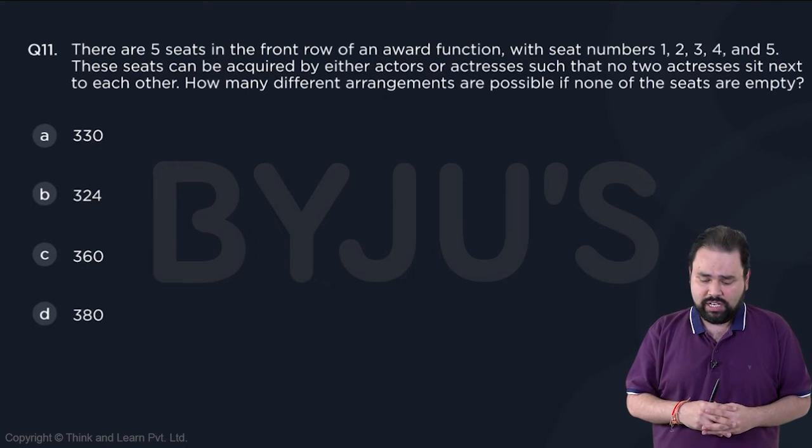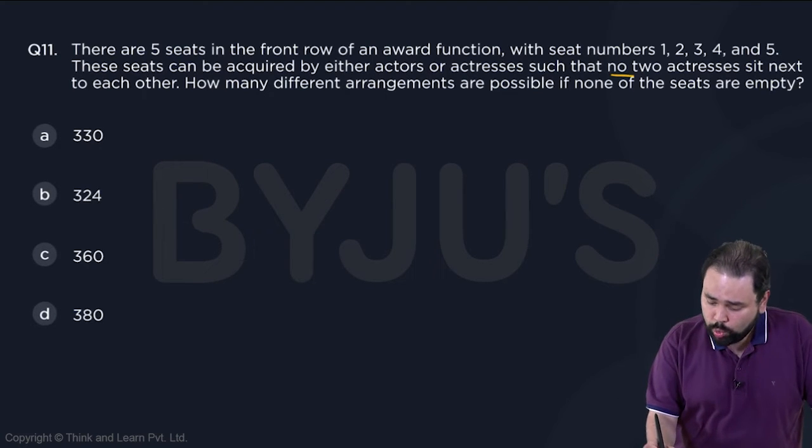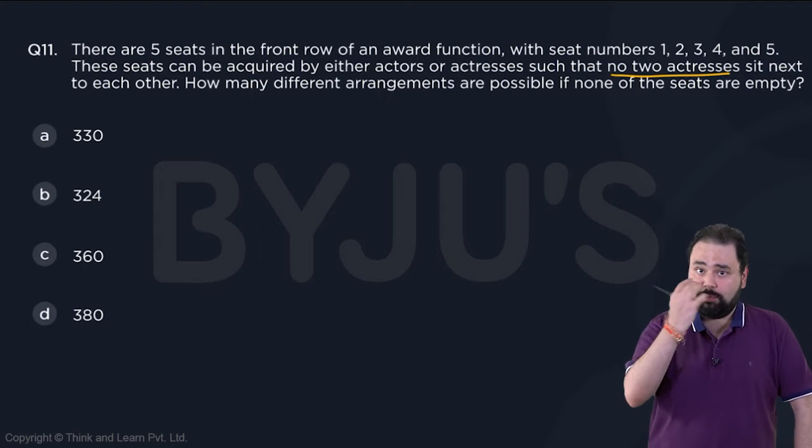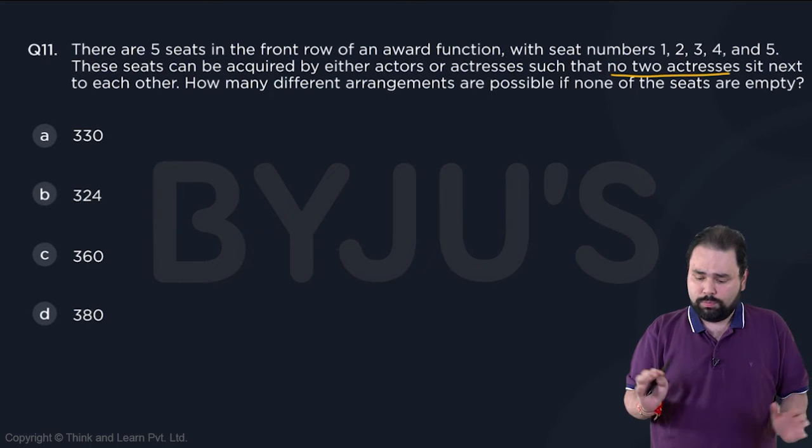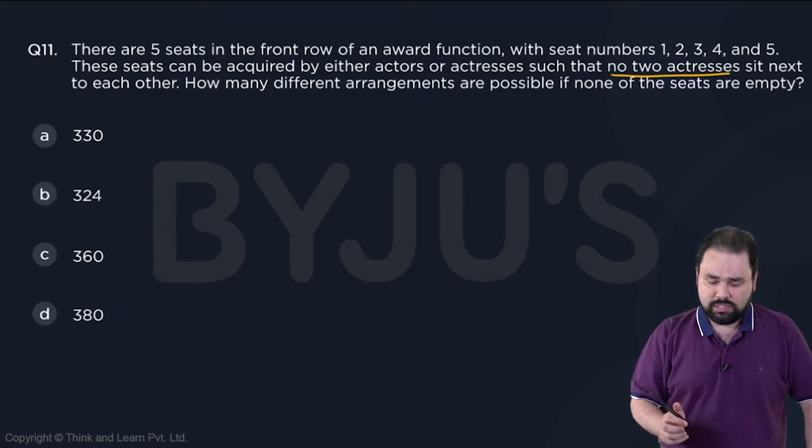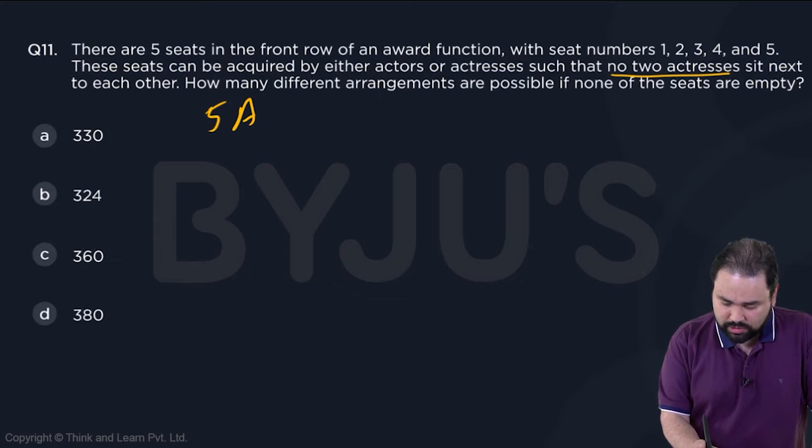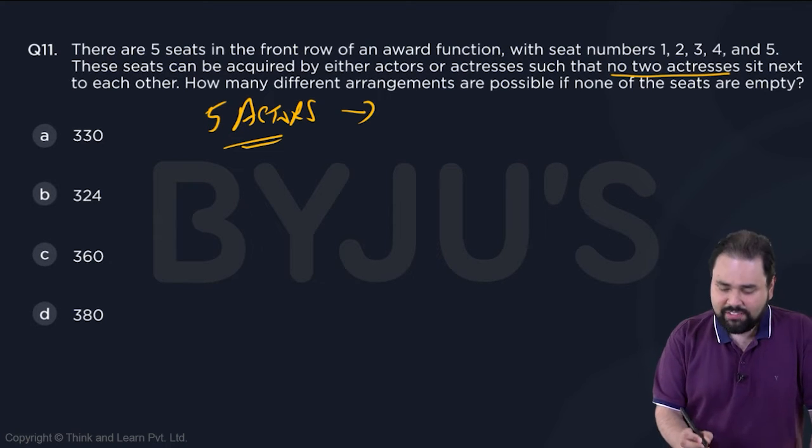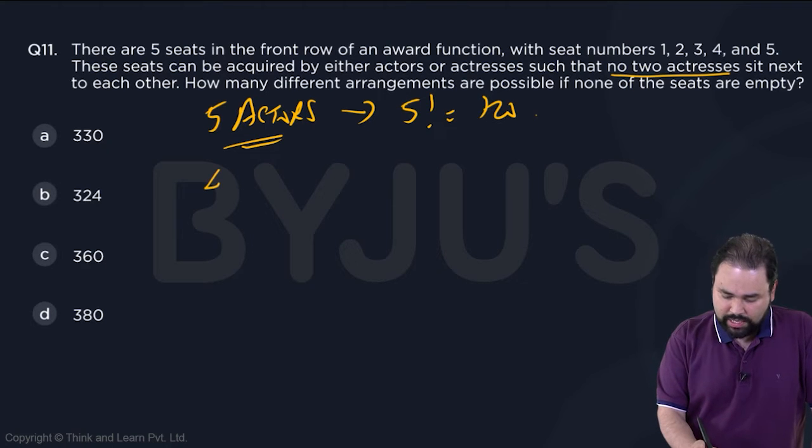If none of the seats are empty, no two actresses should be next to each other. That means the actors can surely be there, no problem. Now there are five seats. The first case is five actors. If there are five actors, they will sit in 5 factorial ways, which is 120.